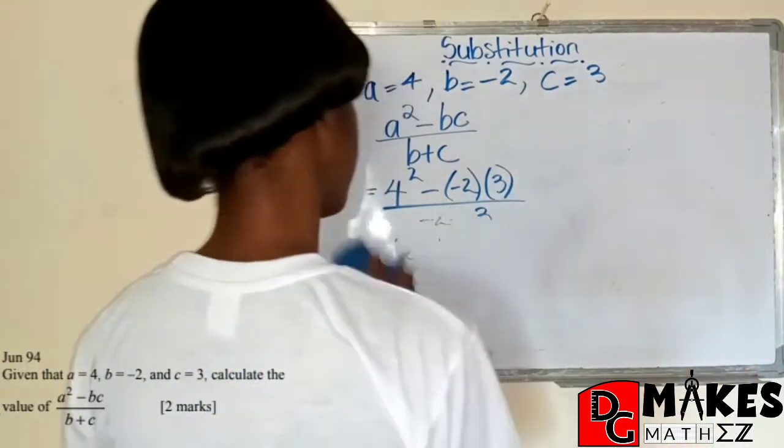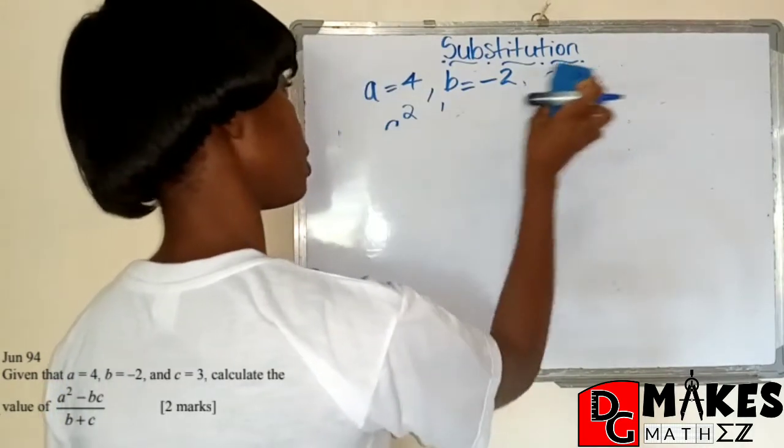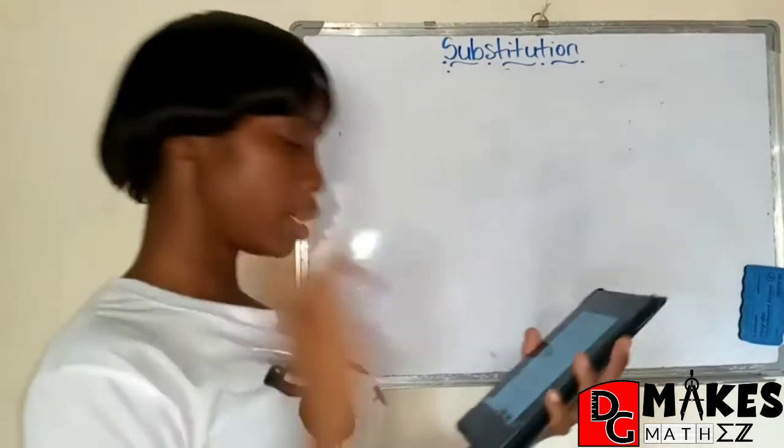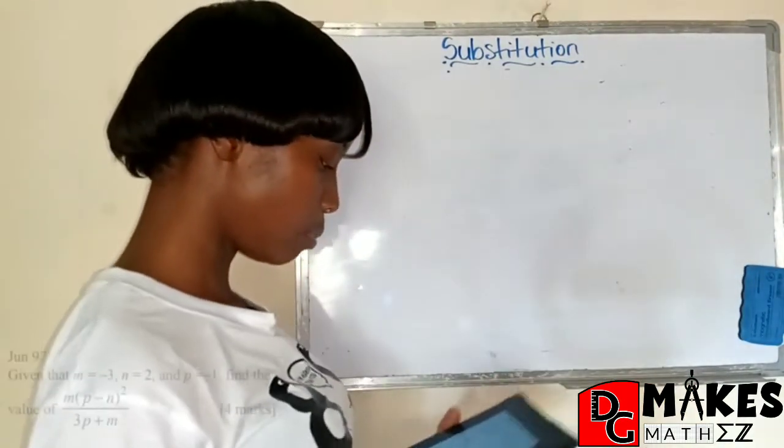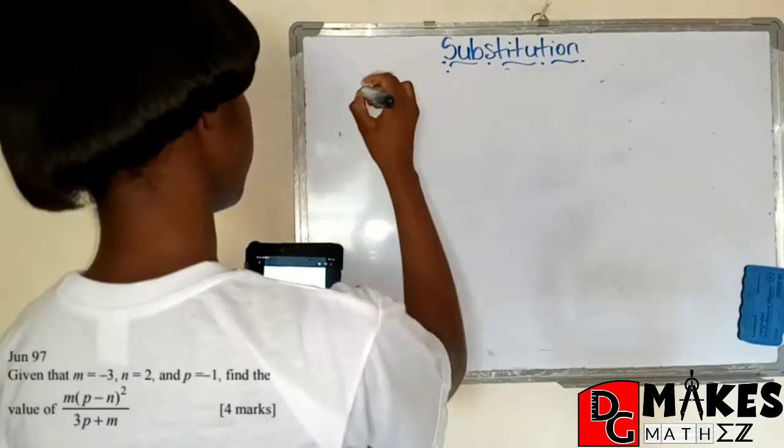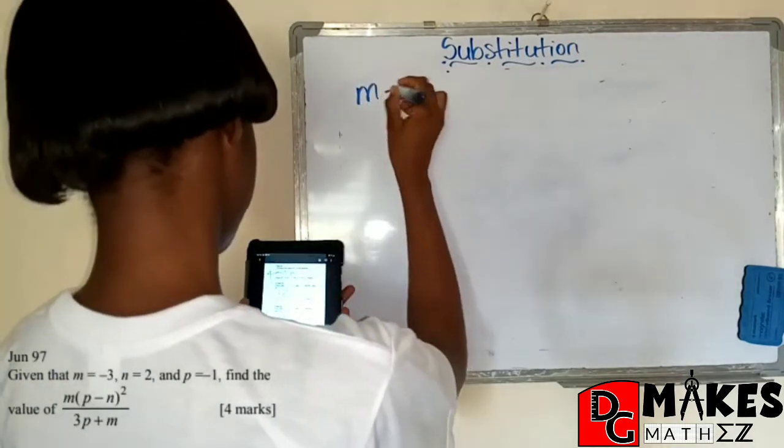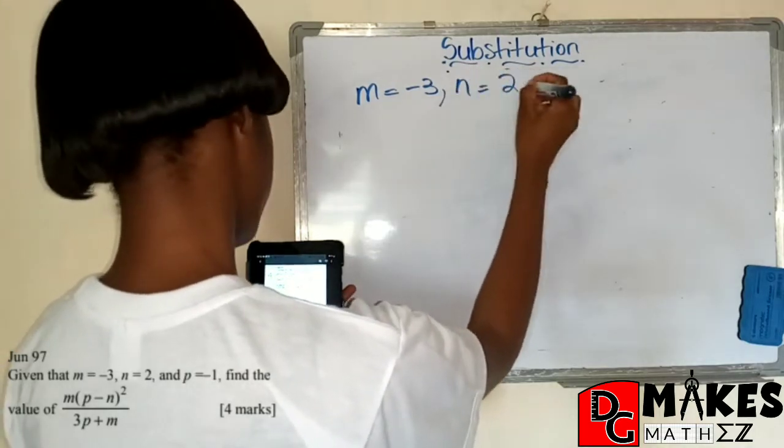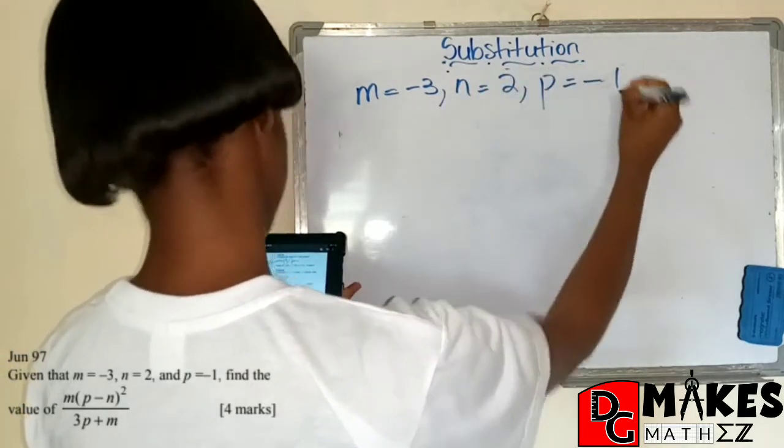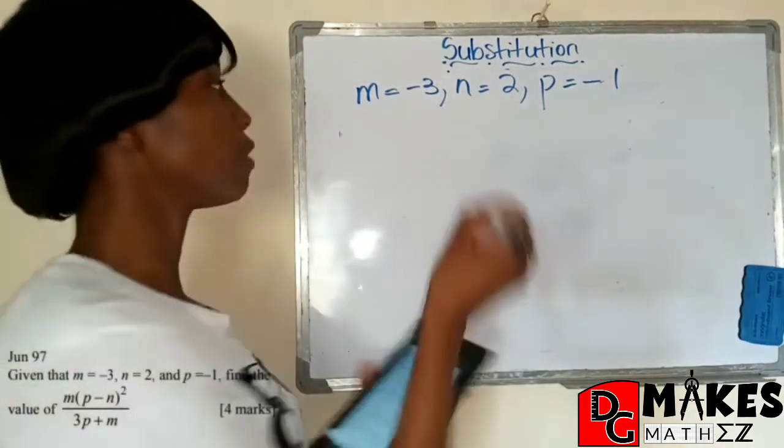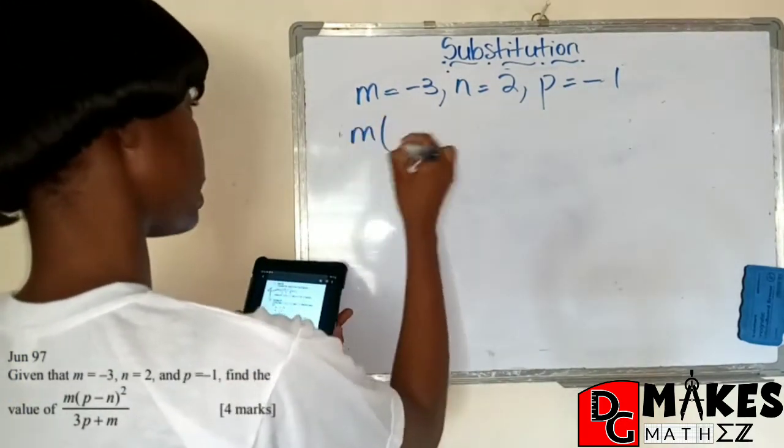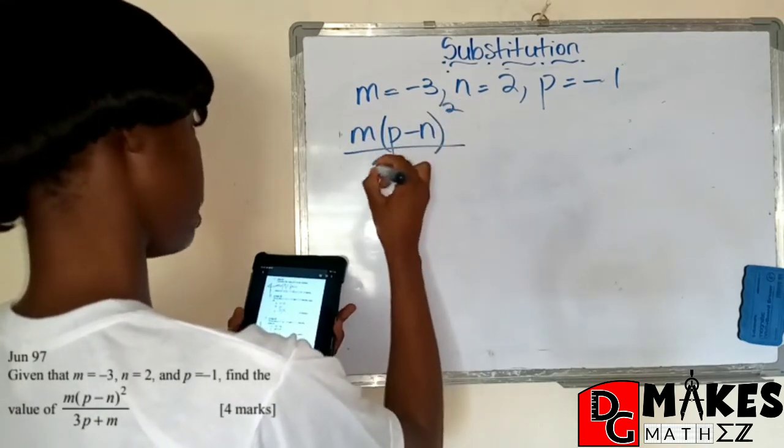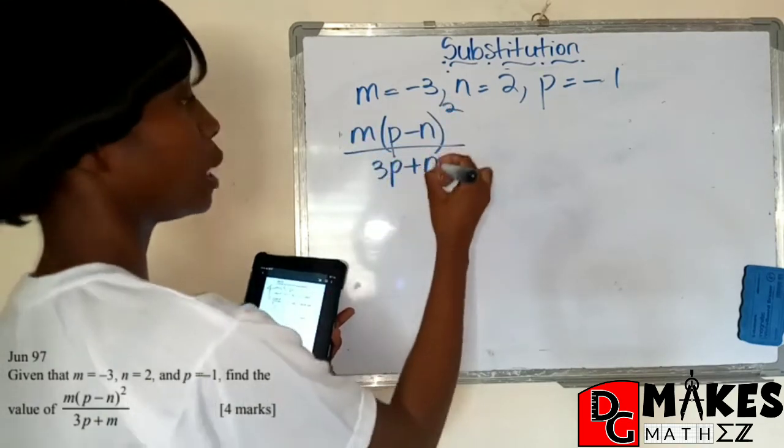And so we're going to get our board clean for our third question. And number 3 says, given that M is equal to negative 3, this one is from June 1997, M equals negative 3, N equals 2, and P equals negative 1. And we need to find the value of M times P minus N all squared divided by 3P plus N.